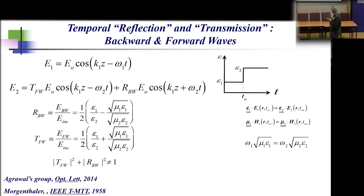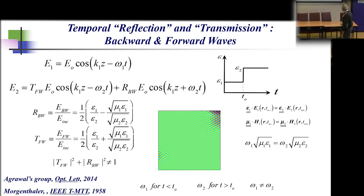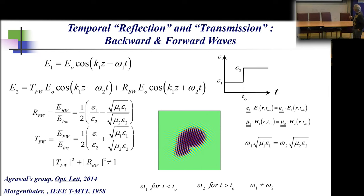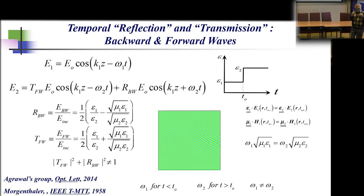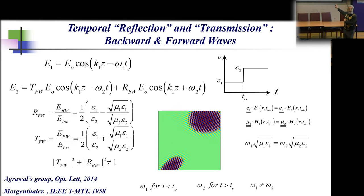This is the temporal equivalent of Fresnel reflection and transmission coefficients, but with a big difference: when you square the transmission coefficient and square the reflection coefficient, their sum is not equal to one, because electromagnetic energy is not conserved — the action on the medium can change the energy of the electromagnetic signal. In a simulation by Victor Pacheco-Peña, one wave goes forward and the other backward with different phase velocities. The wavelengths stay the same because k is conserved, but not the frequency.